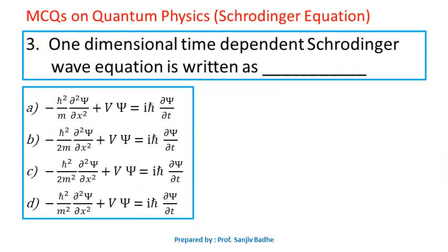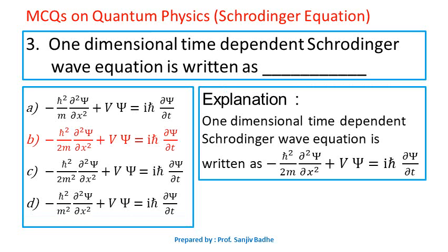Question number 3. The one-dimensional time-dependent Schrödinger's wave equation is written as — which of the given options is correct? The one-dimensional time-dependent Schrödinger's wave equation is: minus ℏ² over 2m times ∂²ψ/∂x² plus Vψ equals iℏ ∂ψ/∂t.